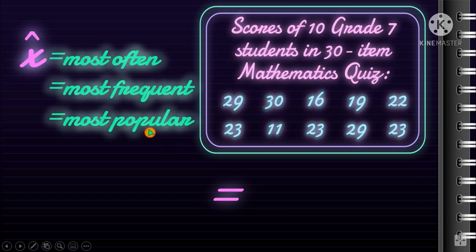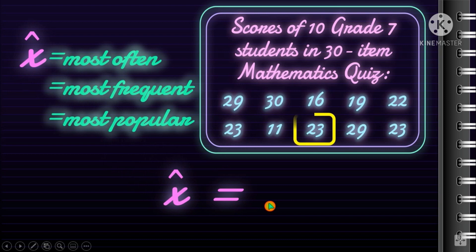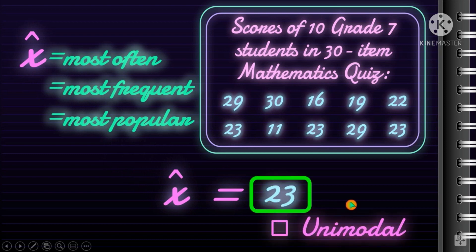Looking at the scores of the 10 Grade 7 students: 29 appears twice, 30 appears once, 16 once, 19 once, 22 once, and 23 appears three times. Therefore, the mode is 23, and it is unimodal since only one value appears the most. If 29 also appeared three times, then we'd have two modes — 23 and 29 — making it bimodal.